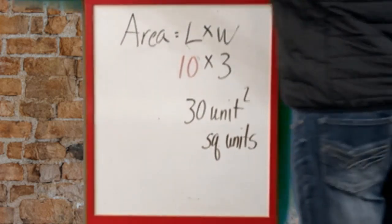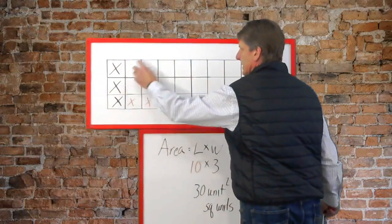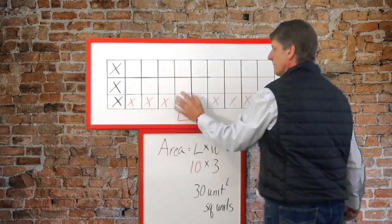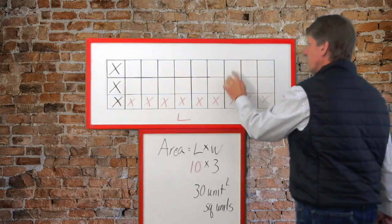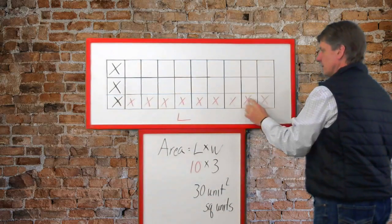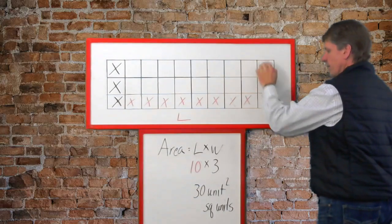And we could test it. One, two, three, four, five, six, seven, eight, nine, ten, eleven, twelve, thirteen, fourteen, fifteen, sixteen, seventeen, eighteen, nineteen, twenty, twenty-one, twenty-two, twenty-three, twenty-four, twenty-five, twenty-six, twenty-seven, twenty-eight, twenty-nine, thirty.